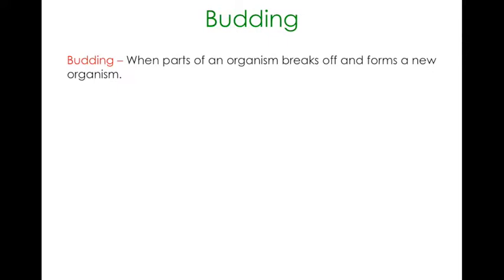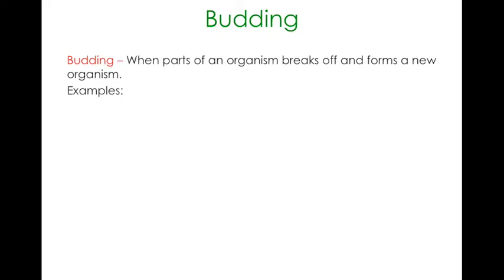Budding is when part of an organism breaks off and forms a new organism. This can be very similar to plant cuttings, but budding is usually referred to for animals rather than for plants. For example, sponges — not the household kind, but marine sponges. These sponges don't have any organs; every single cell forms tissues, and the tissues don't have any organs or structures among them. So if you break off a segment of the sponge, you can regrow it somewhere else, and that will often happen for sponges in order to reproduce.